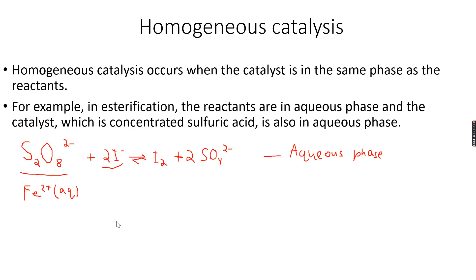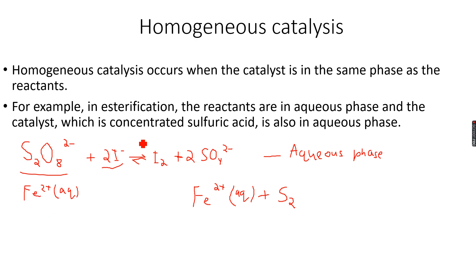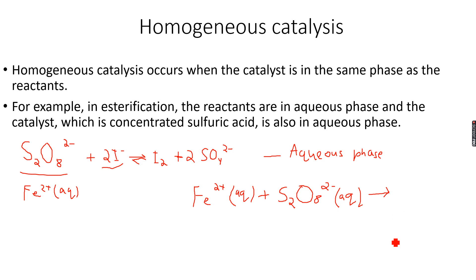This reaction is an example of homogeneous catalysis. In our syllabus we need to know how this reaction works. The first step is Fe²⁺ aqueous ions reacting with S₂O₈²⁻ ions. This reaction is quite feasible because Fe²⁺ ions are positively charged and S₂O₈²⁻ ions are negatively charged, so they attract and will react very readily.